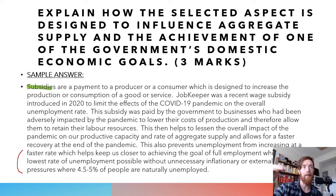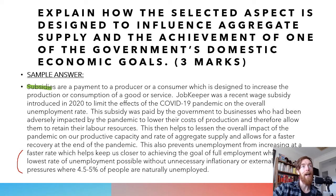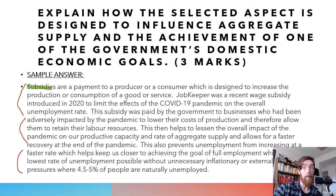To break this down: the first mark is about subsidies and JobKeeper, the second mark is how it affects aggregate supply, and the third mark is the overall impact on the goal of full employment — which is the lowest rate of unemployment possible without unnecessary inflationary or external pressures, where 4.5 to 5% of people are naturally unemployed. A decent amount to cover for three marks, but not too difficult overall.